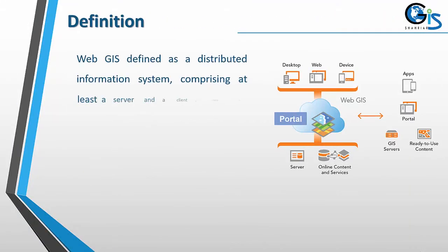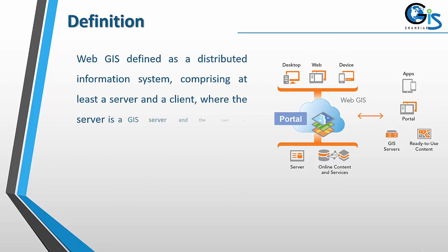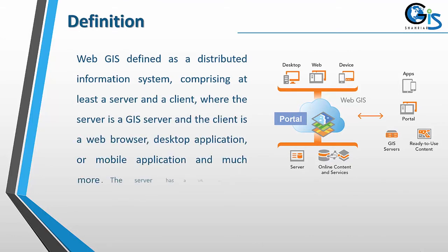Definition of Web GIS: Web GIS is defined as a distributed information system comprising at least a server and a client, where the server is a GIS server and the client is a web browser, desktop application, or mobile application. The server has a URL so that clients can find it on the web.